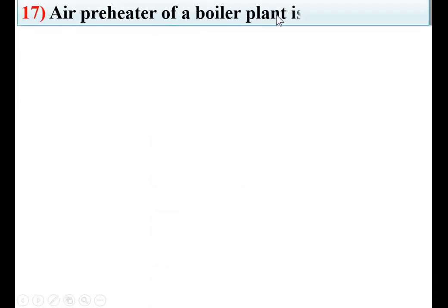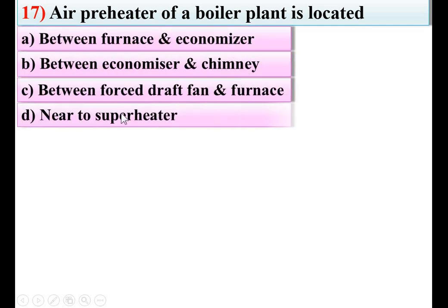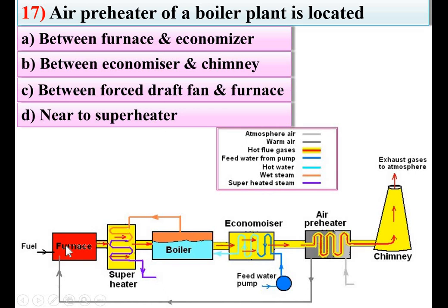Air preheater of a boiler plant is located — options: between furnace and economizer, between economizer and chimney, between forced draught fan and furnace, near to superheater. Considering the important figure showing the location of different parts in the thermal power plant, the air preheater is in between the economizer and the chimney. So B is the right answer.